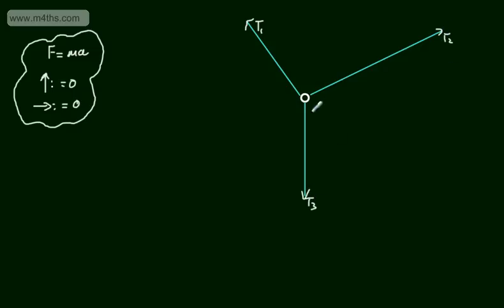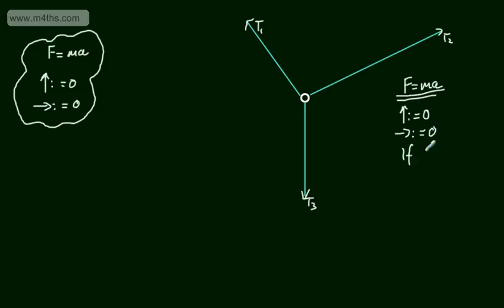If there's no resultant force on the boat, then these forces are said to be in equilibrium. We could use a triangle of forces, or we could use Newton's second law, F is equal to MA. If in equilibrium, resolving in the vertical direction gives zero, resolving in the horizontal direction gives zero. With adequate information, we could find the values of the tensions.